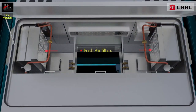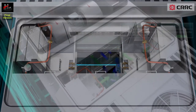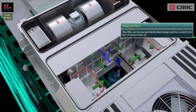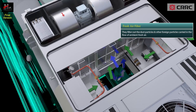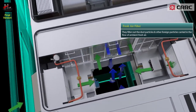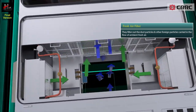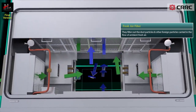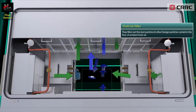The fresh air filters are placed on the downstream side of the fresh air dampers. They filter out the dust particles and other foreign particles carried in the flow of ambient fresh air.